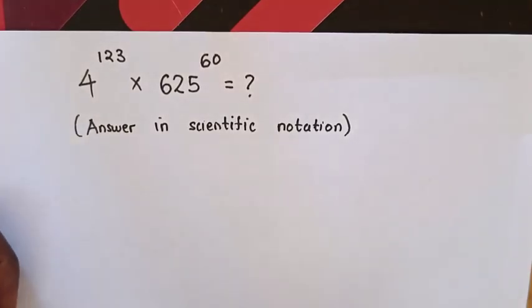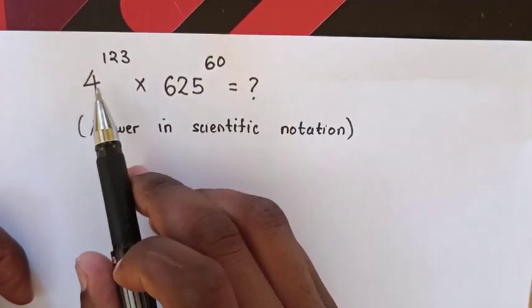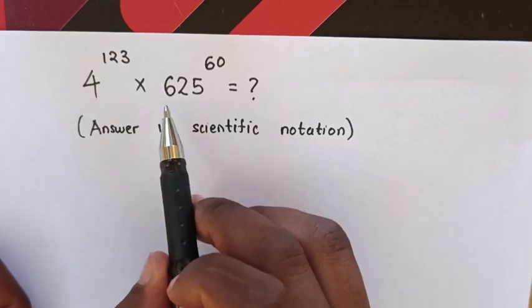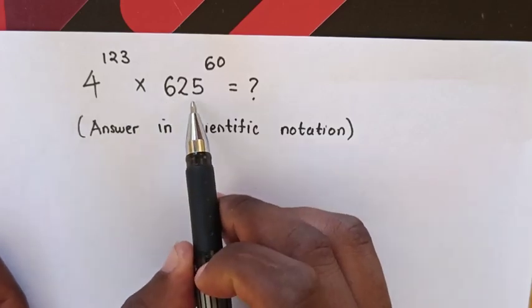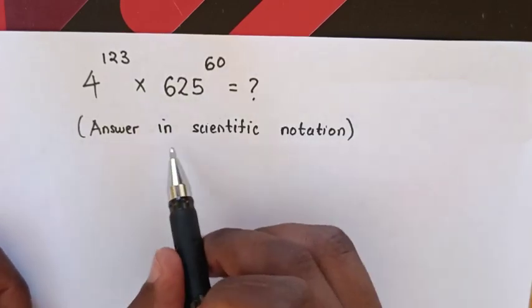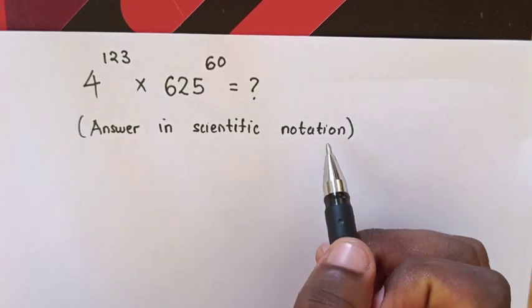Hello, how to solve 4 power of 123 times 625 power of 60? The answer should be in scientific notation.